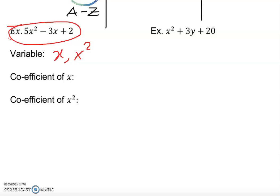So coefficient of x, what is coefficient of x? Coefficient of x is basically negative 3, coming from there. And coefficient of x square is basically 5. So you have understanding what is coefficient, what is variable, and let's take a look at the other one here.